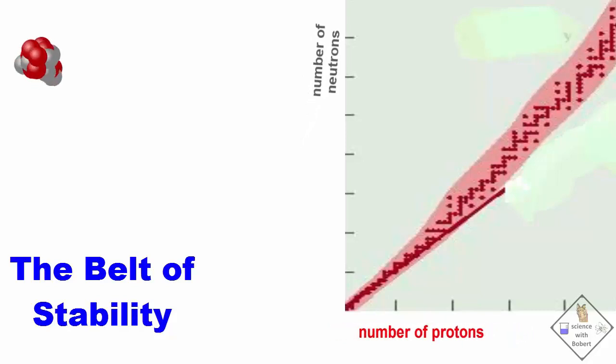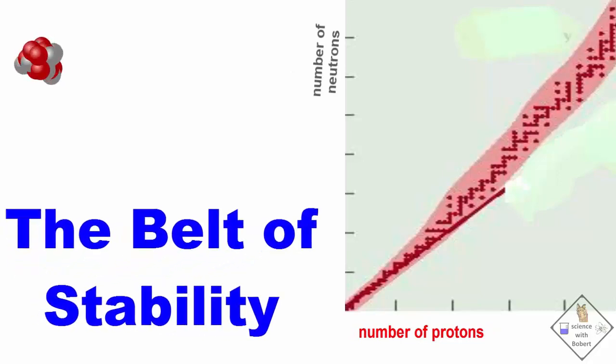I know this gets confusing. So to keep all this straight, chemists use a plot called the belt of stability.